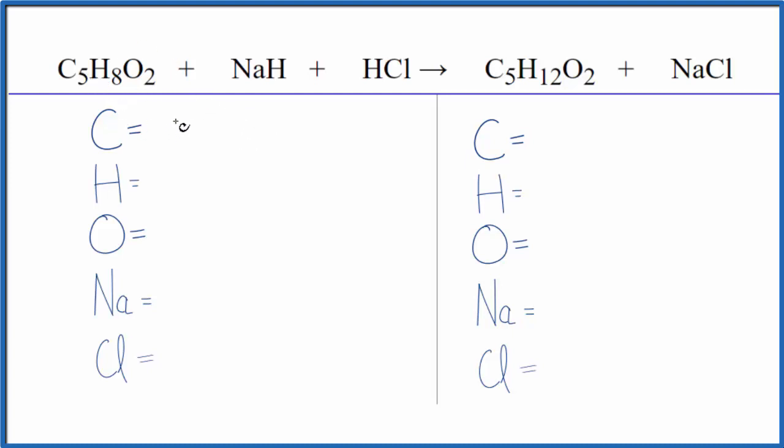So carbon, we have five of those. We have eight hydrogens, but don't forget we have a hydrogen here and here. So we have eight plus one plus one. We have ten total hydrogen atoms, two oxygen atoms, and then one sodium and one chlorine.